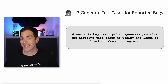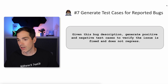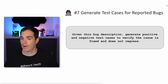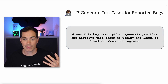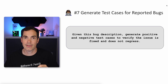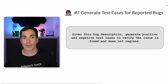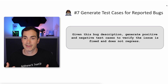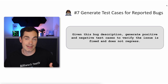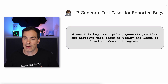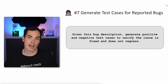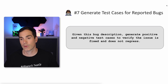Prompt seven: generate test cases for reported bugs. Given this bug description, generate positive and negative test cases to verify the issue is fixed and does not regress. There are plugins and toolings out there that you can plug into your ticketing system — I've done a couple of videos on that. You can click a button and get test cases out of the box. In case you don't have such a plugin, you can use this prompt to do the same thing.